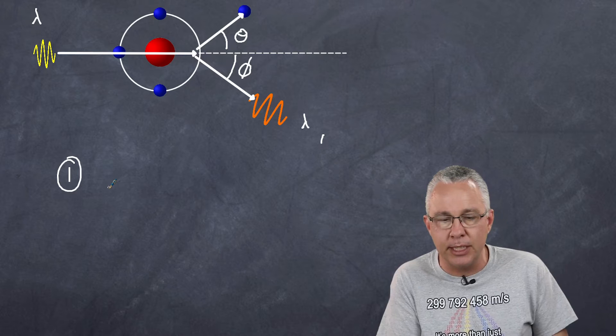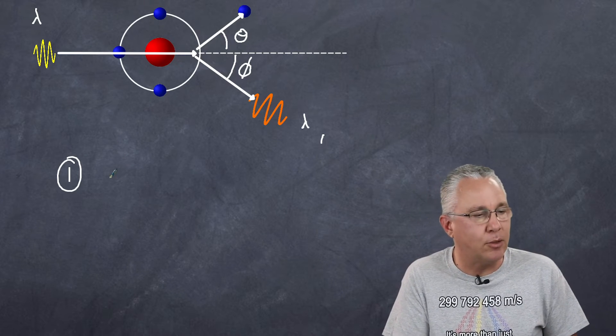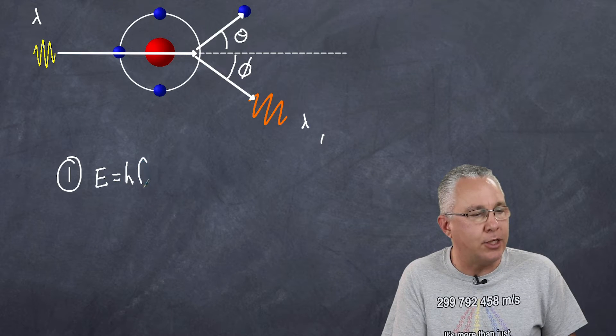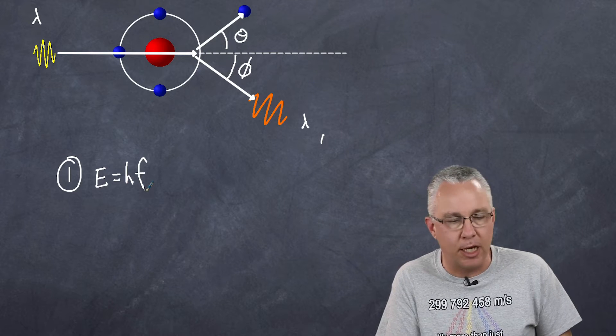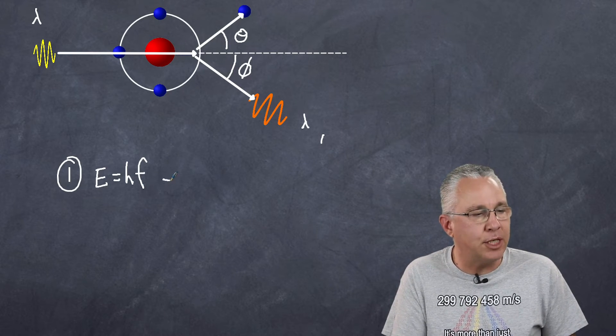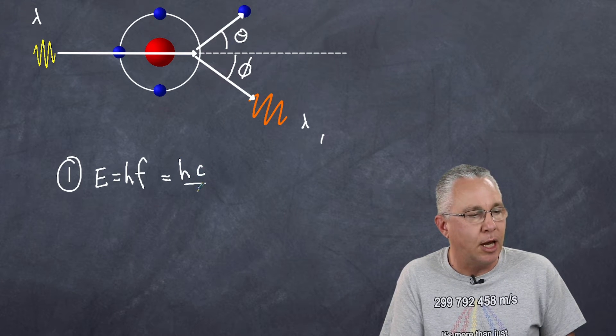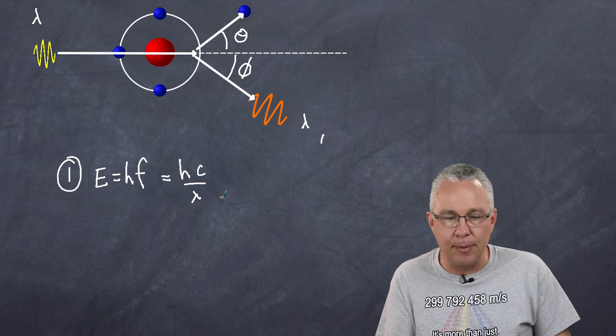That means that they have an energy that is related to HF. In other words, E is equal to Planck's constant multiplied by the frequency. And that, of course, if I then substitute the frequency, we get HC over lambda. So that's our first assumption. They are acting like particles.